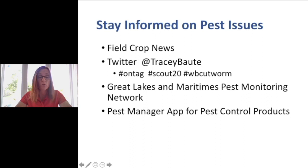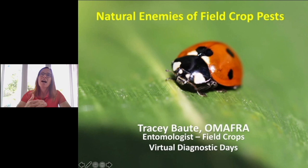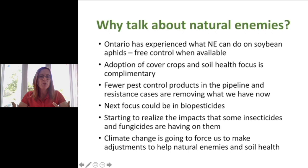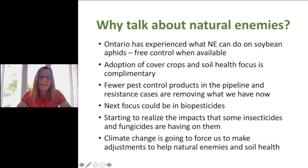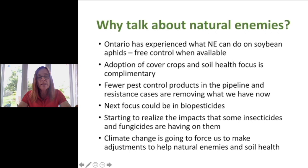Now I want to talk about natural enemies. I think they're our next frontier in determining when and if we need to spray, and it's really important to start paying more attention to them. Here in Ontario we have really good experience with natural enemies and just how much impact they can have — for example on soybean aphids. We're proud to be one of the first jurisdictions to have a dynamic action threshold based on the level of natural enemies you see versus the pest.